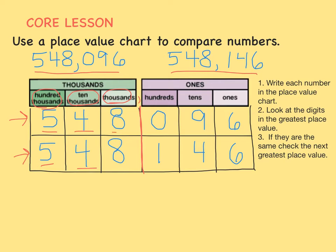The first number has an 8 in the thousandths place, and the second number also has an 8 in the thousandths place. Let's move to the next greatest place value, which is the hundredths place. The first number has a zero in the hundredths place, while the second number has a 1 in the hundredths place. Finally, something different! This means we won't need to go any further. Our answer lies in the hundredths place.